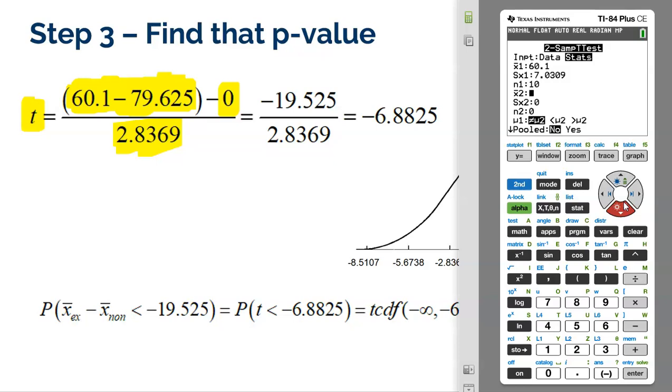For the second group, that's going to be my non-exercisers. Their mean was 79.625. Their standard deviation was 4.9839. And their sample size was only eight. Now, I put that eight in the wrong place. There it is, eight.